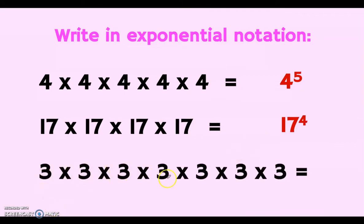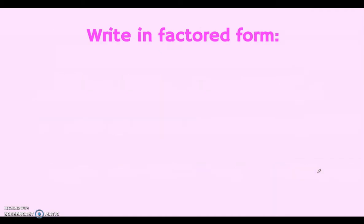For the next example, we have 3 multiplied repeatedly. Count the number of 3s — that count is our exponent: 1, 2, 3, 4, 5, 6, 7. Therefore, we write 3 as the base and 7 as the exponent, giving us 3 to the power of 7.